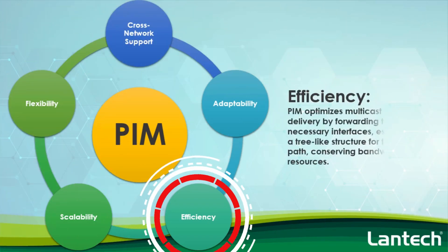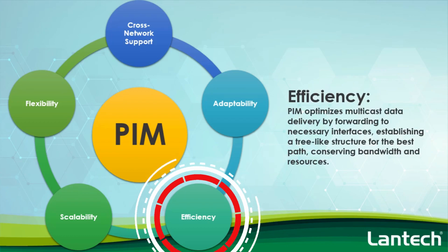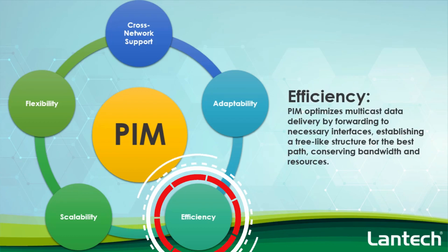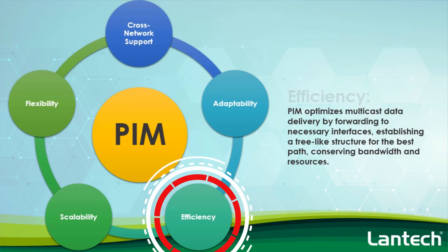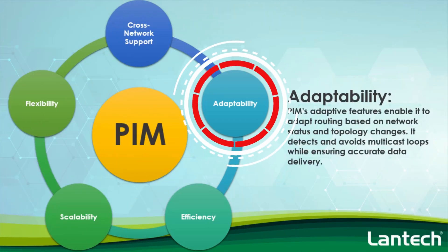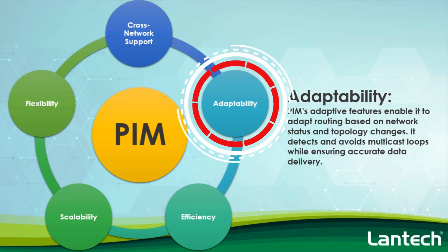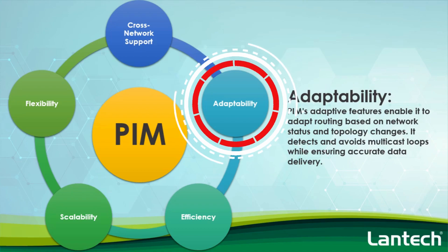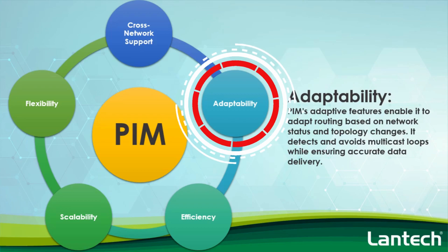Third, efficiency: PIM optimizes multicast data delivery by forwarding to necessary interfaces, establishing a tree-like structure for the best path, conserving bandwidth and resources. Fourth, adaptability: PIM's adaptive features enable it to adapt routing based on network status and topology changes. It detects and avoids multicast loops while ensuring accurate data delivery.